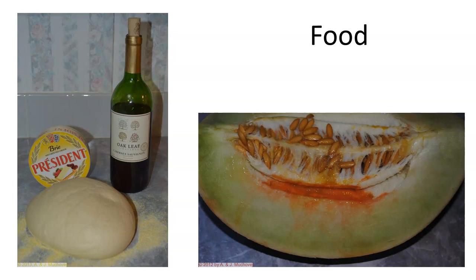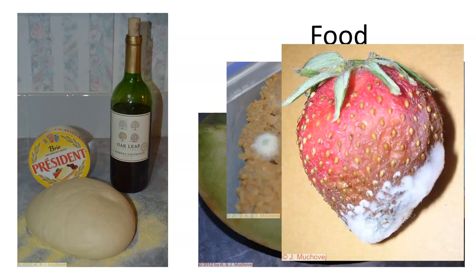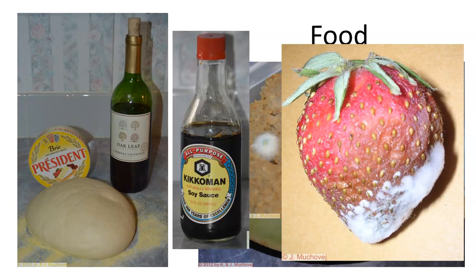Fungi also affect food in negative ways. This melon has a yeast or similar fungus growing on the inside — it is ripe for the recycle bin. This piece of meatloaf has two or three different kinds of fungi growing on it. This strawberry is past its prime and the fungus is helping decompose it. And then this is soy sauce, which is actually a fermented product brewed using a specific fungus that helps digest the soybean so that it can turn into soy sauce.